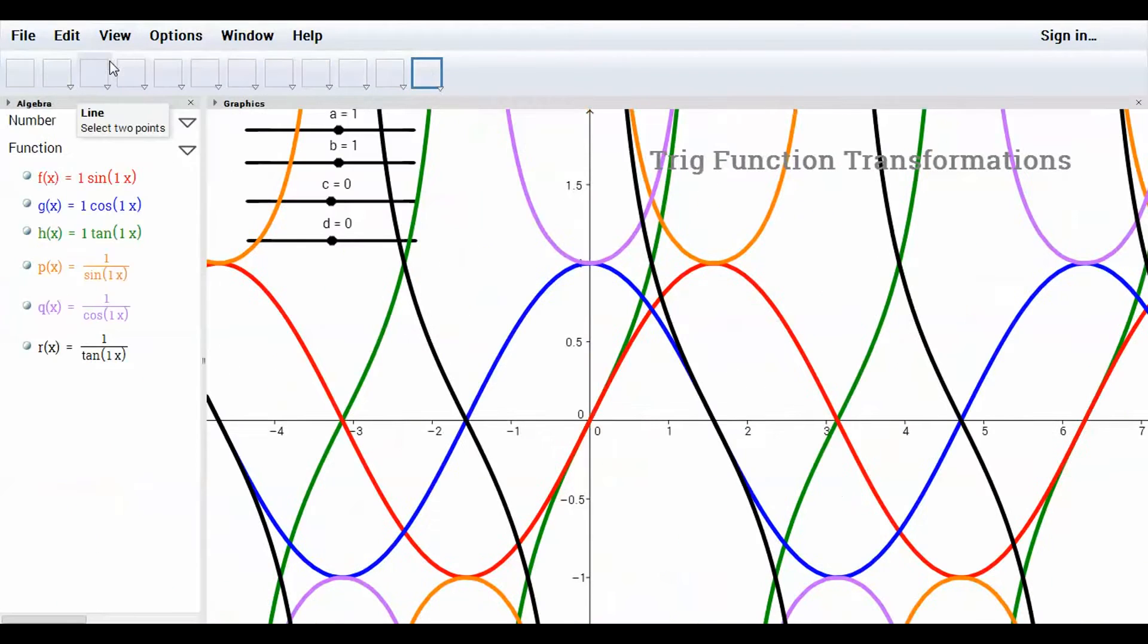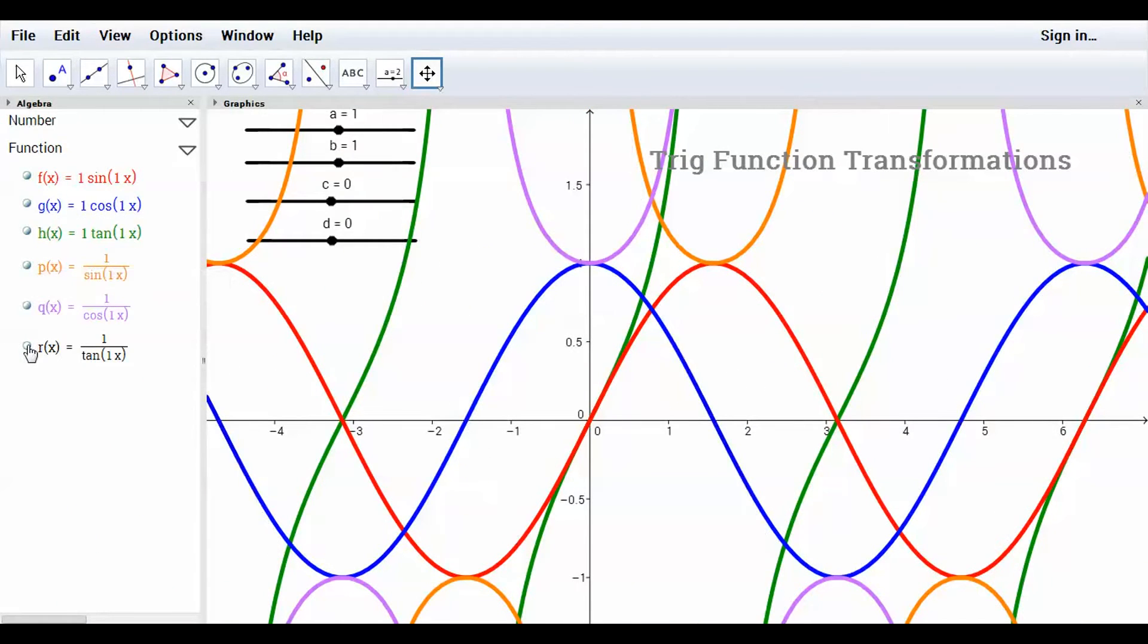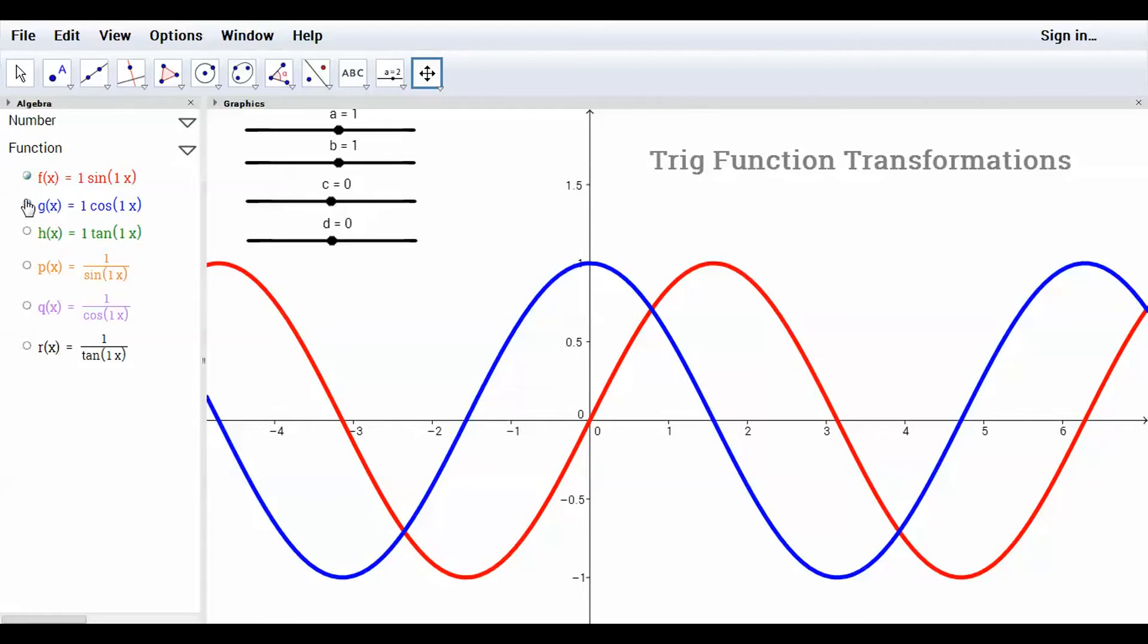And you'll see that if I move these sliders around, the A, B, C, and D values are a little bit easier to see.